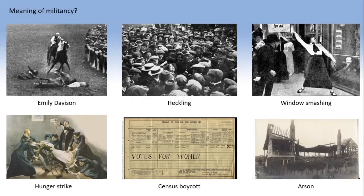I quite often ask my students to rank these different forms of militancy. Many come to the conclusion that arson was the most militant because of the extensive destruction of property. Others conclude it was hunger striking. Historians have noted the symbolic significance of hunger striking — through the violence done to suffragettes' bodies, they were revealing the misogyny at the heart of the British government and the lengths it would go to in order to deny women the vote.